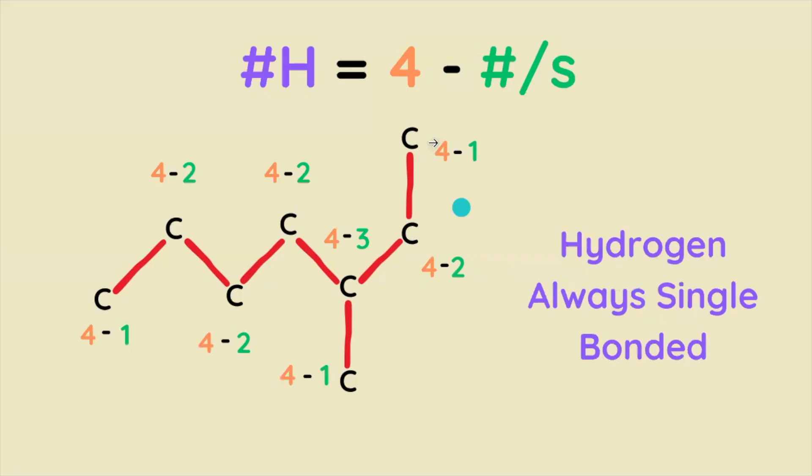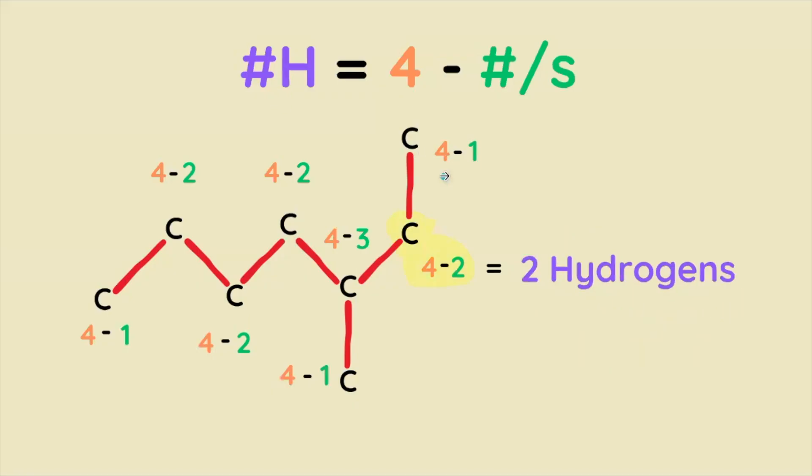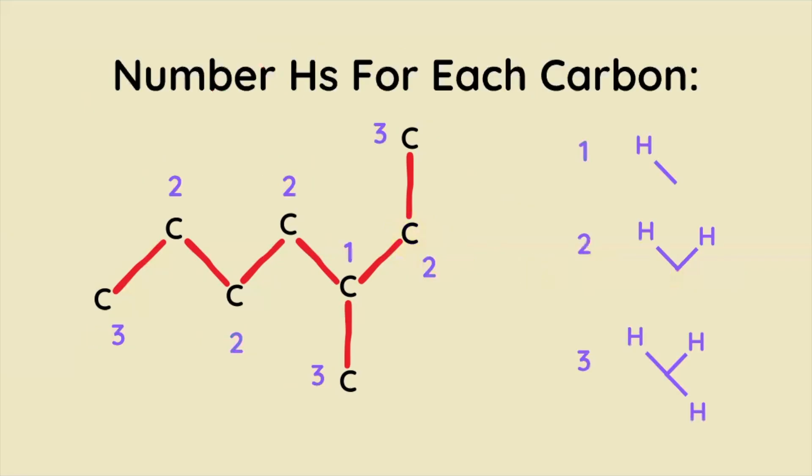So for example if this carbon appears to only have 1 bond it actually does have 4 bonds, it's just that to find the number of hydrogens we do 4 minus 1. So that carbon is going to have 3 hydrogens but this is going to be 2 hydrogens. And we're going to do this calculation for every single carbon to figure out how many hydrogens it has.